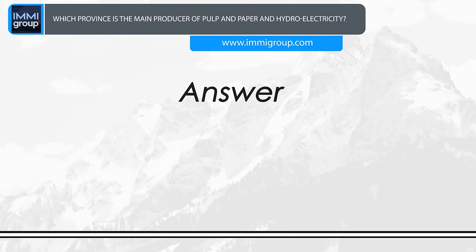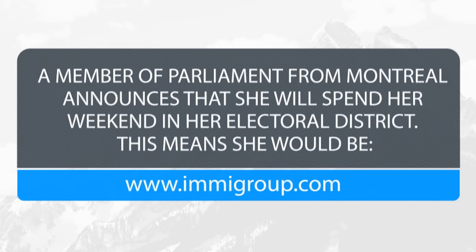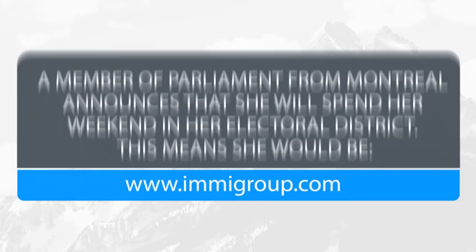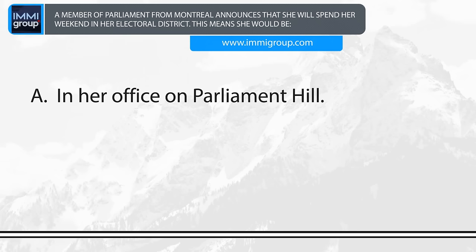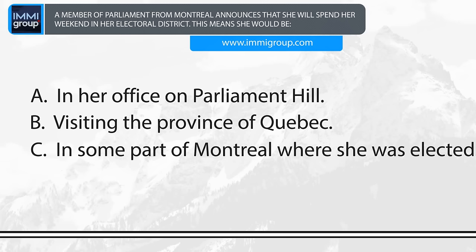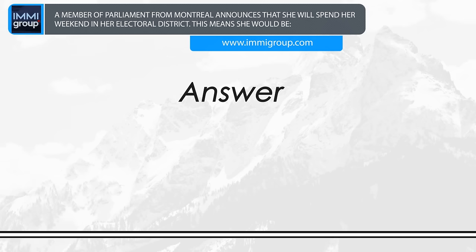A member of Parliament from Montreal announces that she will spend her weekend in her electoral district. In fact, this means she would be... A. In her office on Parliament Hill. B. Visiting the province of Quebec. C. In some part of Montreal where she was elected. D. Going on a vacation. Answer: In some part of Montreal where she was elected.